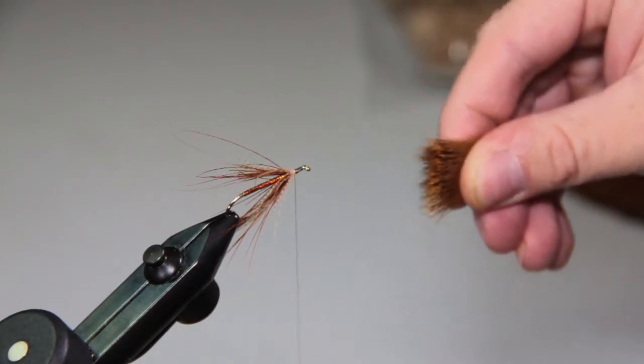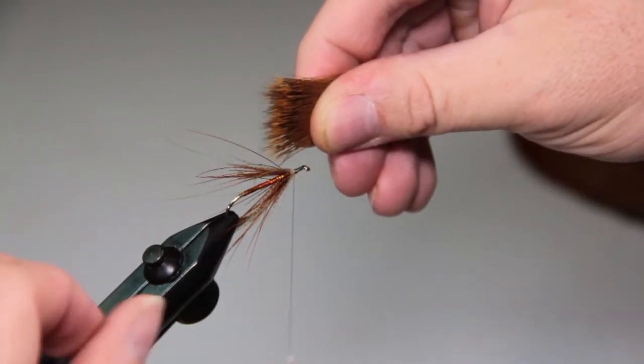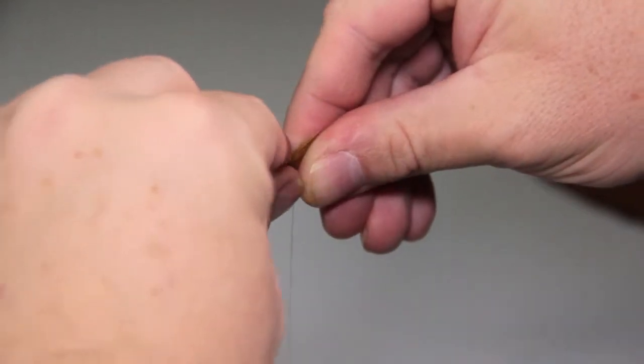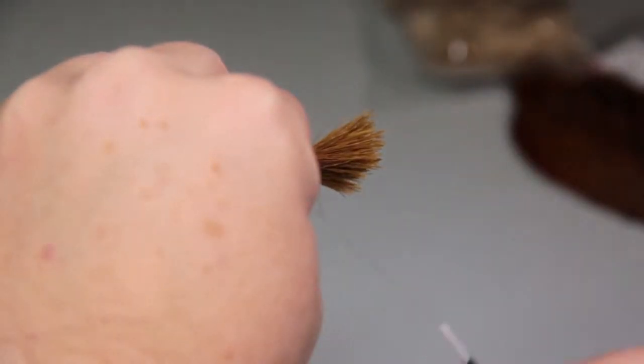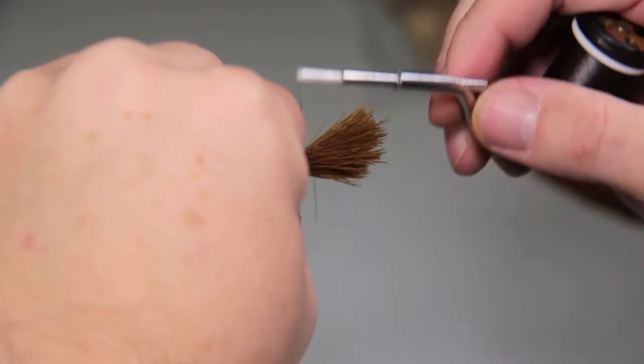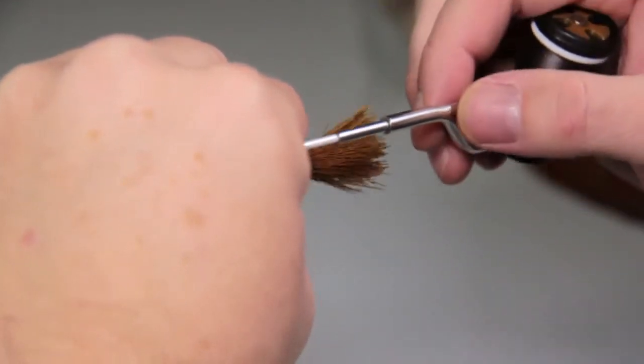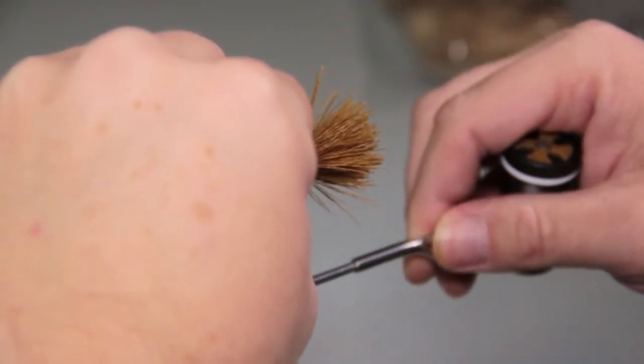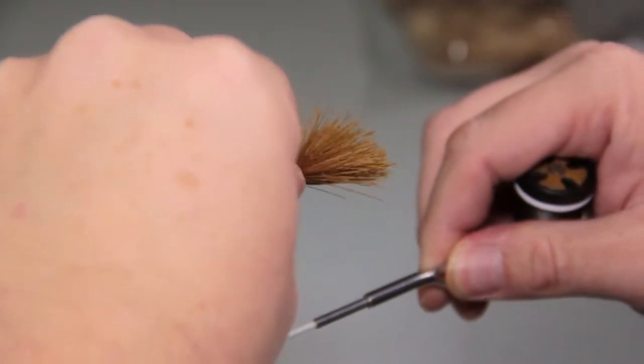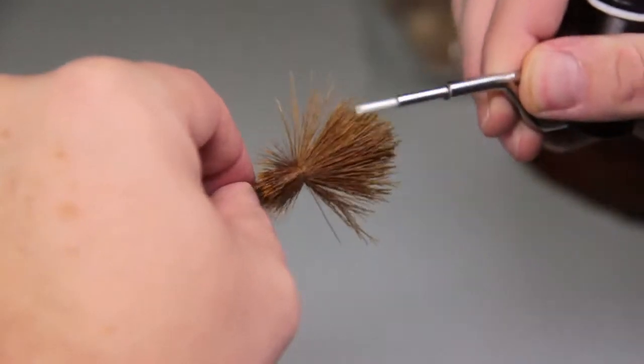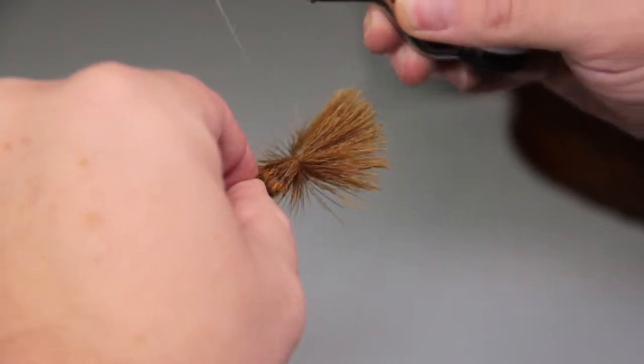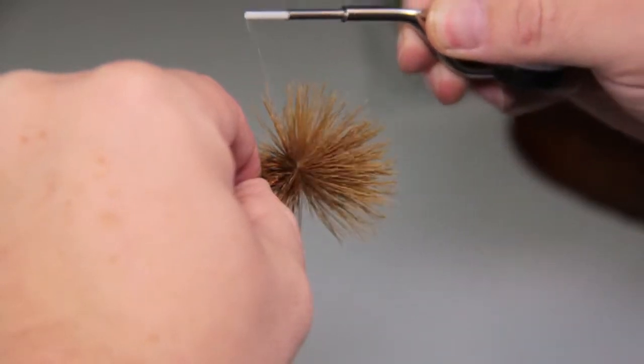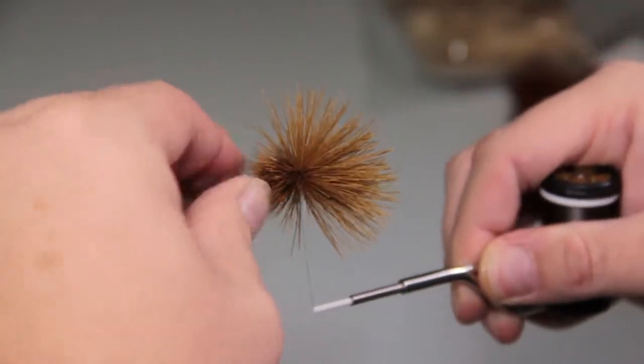Once we've got our deer packed and prepped, I'm going to measure the collar and drive that right into the hook. One soft wrap over the top of that whip finish, a second loose wrap, start to apply some tension, and as that happens we're just going to gently and slowly let go of that hair, and just keep applying the tension to flare it.